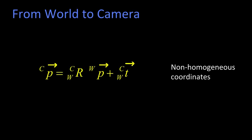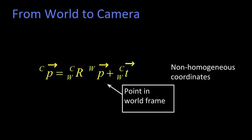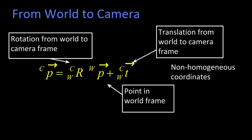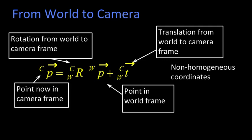So now finally, we can talk about going from world to camera frame. Here's our equation, using non-homogeneous regular coordinates. If we have some point P in the world, so that's a point location in the world frame, we have to rotate it oriented to know which way it would be oriented in the camera frame. And then we have the translation from the world to camera frame.